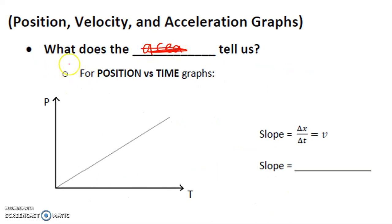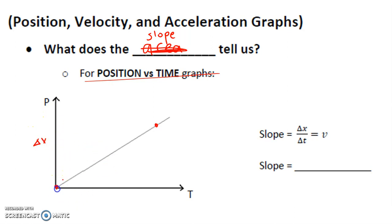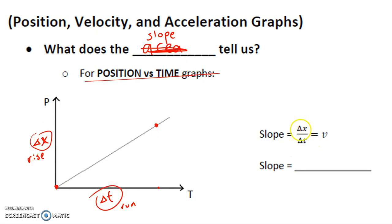Let's ask ourselves what does the slope tell us for a position-time graph. If we look at two points on a position-time graph, there's a change in position from one point to the other, occurring over a certain period of time. Slope is always rise over run — in this case rise is change in position, run is change in time — which tells us our velocity.